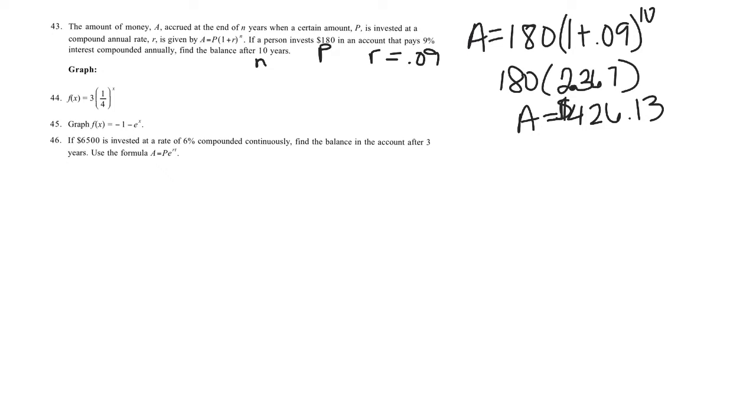Number 44, graph 3 times one-fourth to the X power. This is exponential. Exponentials have an asymptote, and in this case it's not translated anywhere, so the asymptote is Y equals 0. So far I'm going to plug in negative 1, 0, and 1.